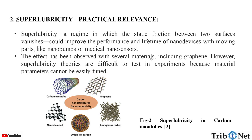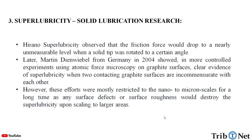The effect has been observed with several materials including graphene. However, superlubricity theories are difficult to test in experiments because the material parameters cannot be easily tuned. Here in this figure, we can see superlubricity in carbon nanotubes.